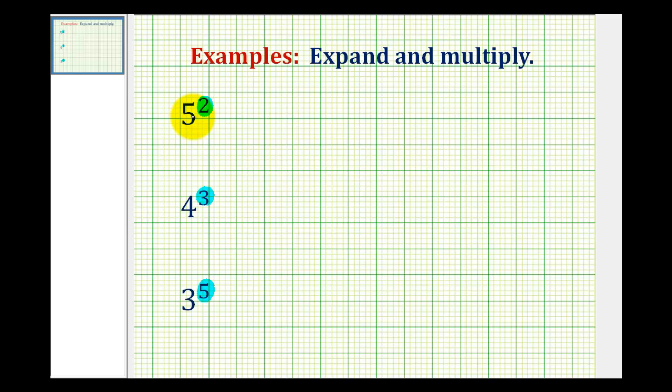The larger number to the left is called the base. So here the base is five, here the base is four, and here the base is three. So when something is written in exponential form, the exponent tells us how many factors of the base we're multiplying together.